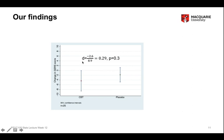I can calculate Cohen's D to be 0.29, which is in the small range, and the p-value from the unpaired t-test is 0.3. I'm therefore going to accept H0 and conclude that while there is some improvement, some benefit of CBT over placebo, it's not large enough or clear enough for me to reject H0 and conclude that CBT is clearly superior to placebo.